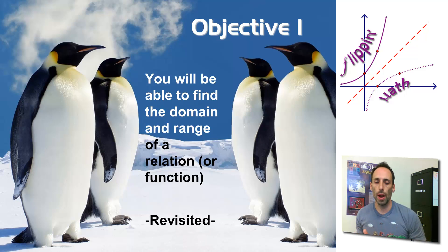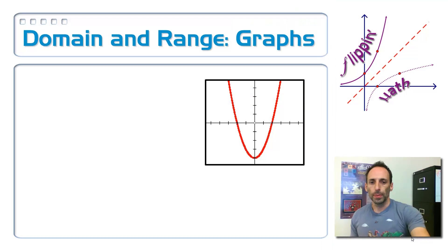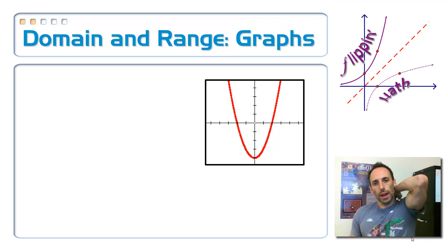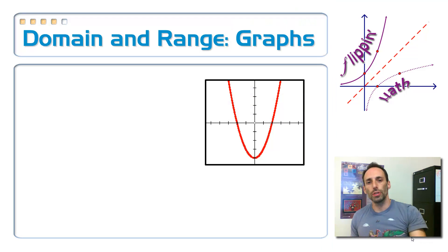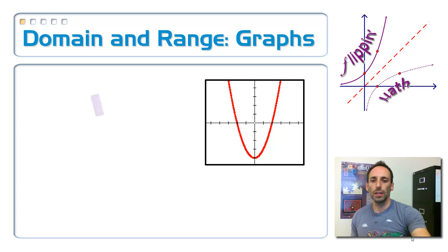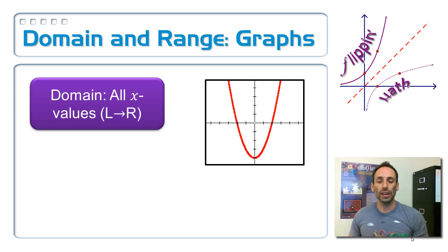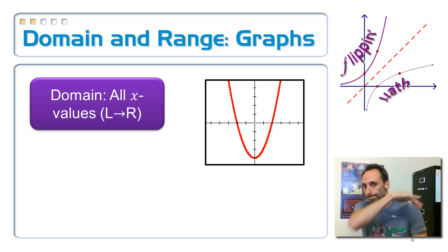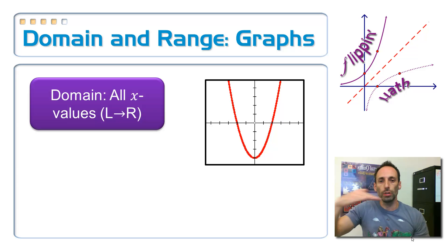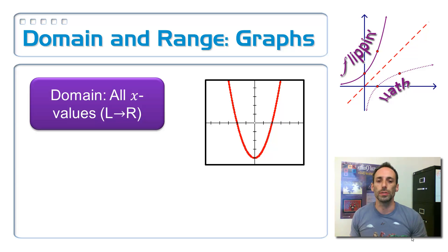We're going to look at it as graphs and we're going to look at it as an equation. If I give you either of these things, what's the domain, what's the range? So let's look at it in graphs. Graphs should be the easy one because you have a picture there to go by. So let's take the domain first. Domain we know are all the x values. Where are x values on the graph? They're along the x-axis, they're the horizontal ones.